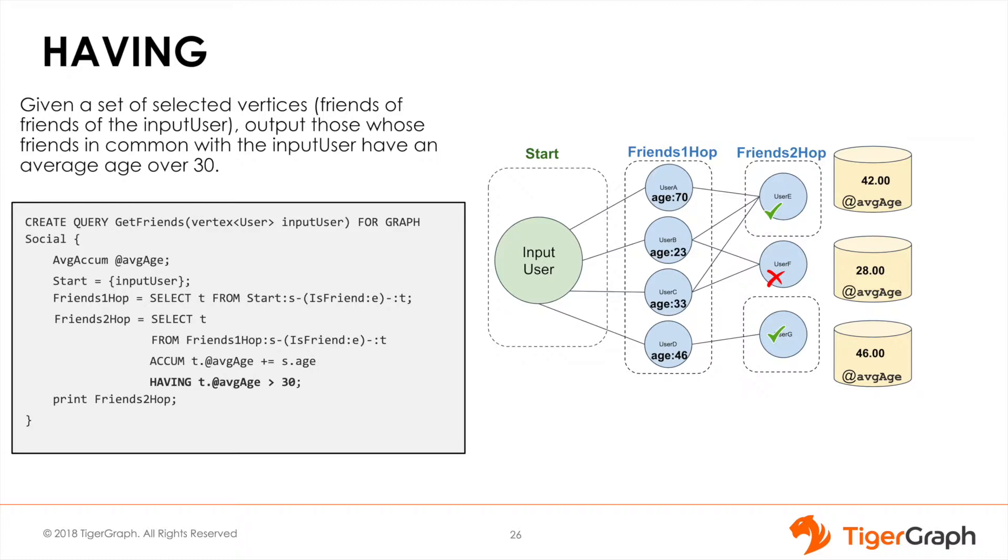In this query example, we are finding common friends of an input user who have an average age of over 30. First, we accept the vertex input of type user, and we have an average accumulator named average age.